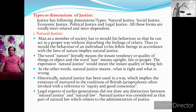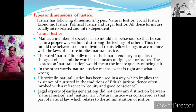Now we shall discuss various dimensions or types of justice. Justice has the following dimensions or types: natural justice, social justice, economic justice, political justice, and legal justice. All these are totally interrelated and interdependent with each other. First of all, we shall discuss natural justice. Man, as a member of society, has to mould his behaviour so that he can act in a proper way without disturbing the feelings of others. To mould the behaviour of individuals, in accordance with the law of nature, implies natural justice.